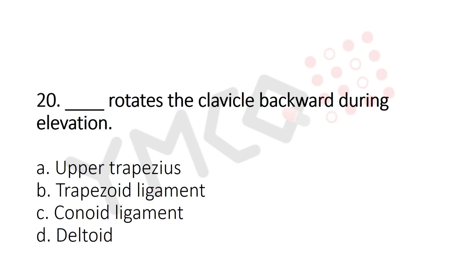Question 20: Which structure rotates the clavicle backward during elevation? Option A: upper trapezius; option B: trapezoid ligament; option C: conoid ligament; option D: deltoid. The answer is option C: conoid ligament.